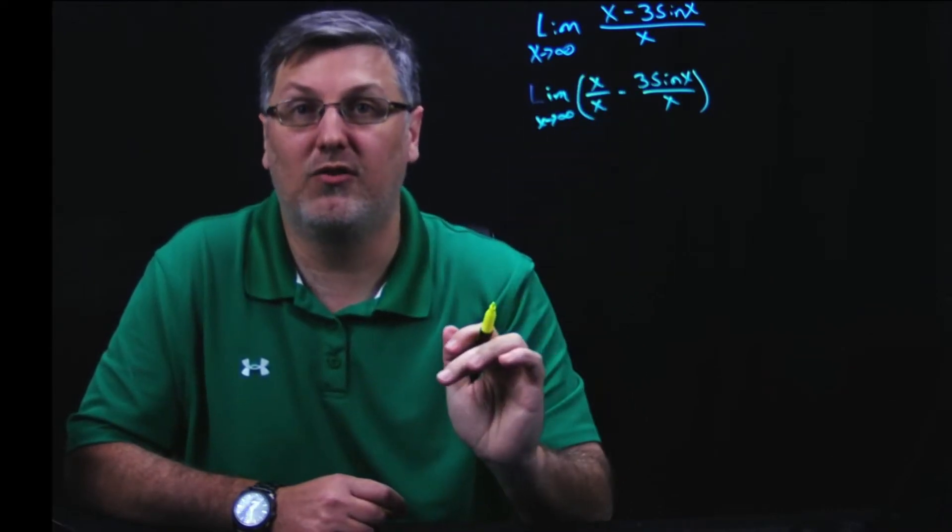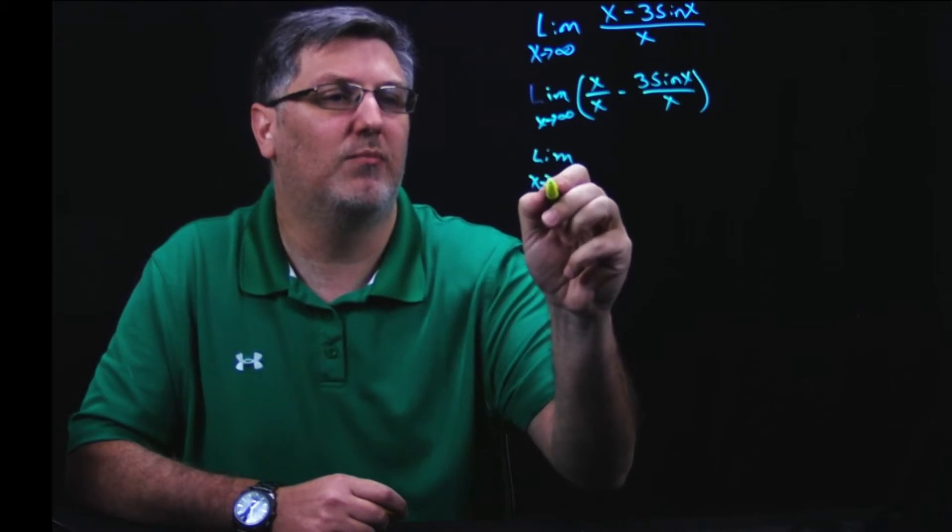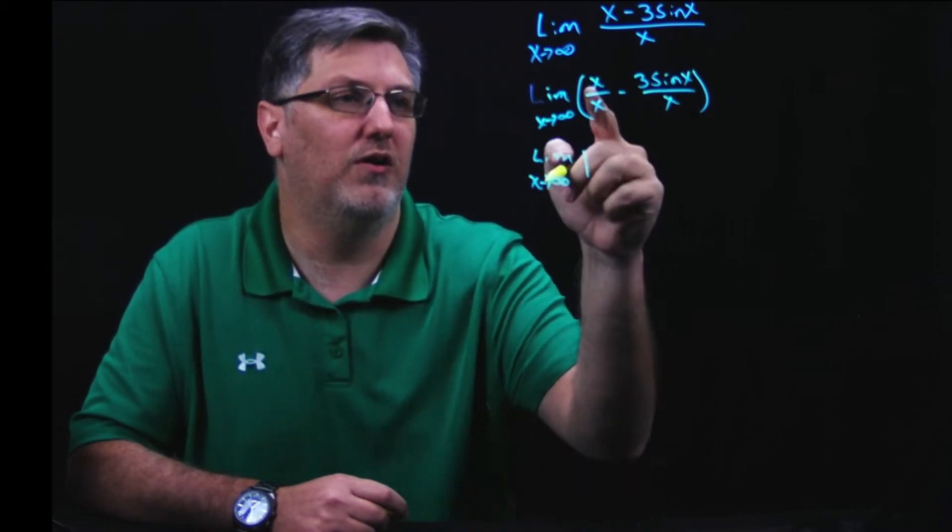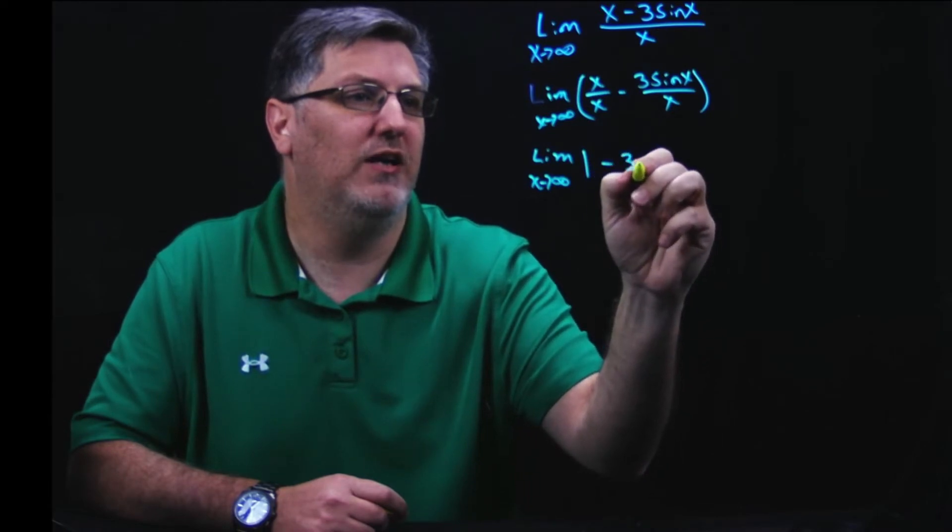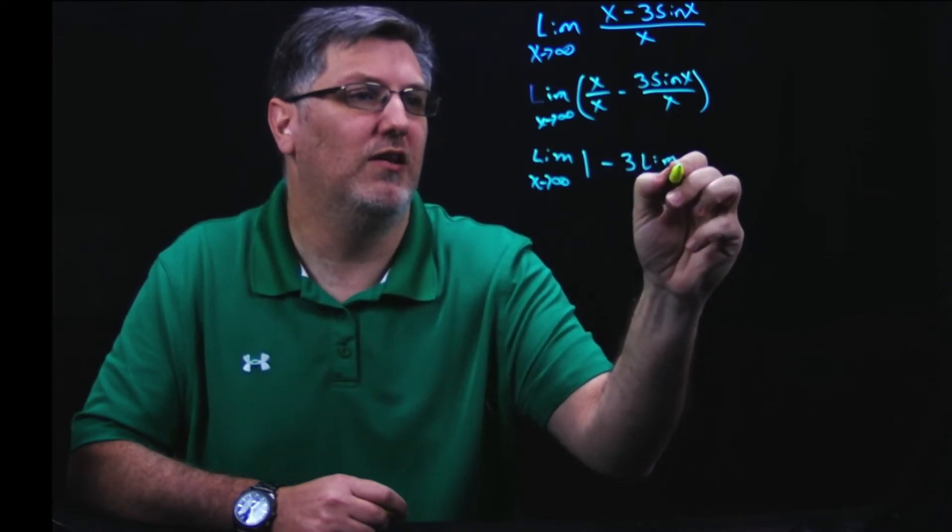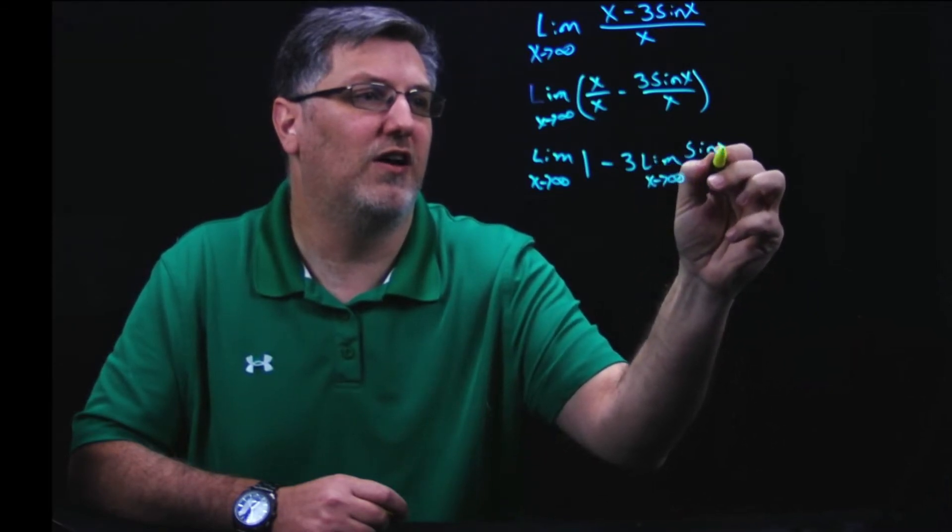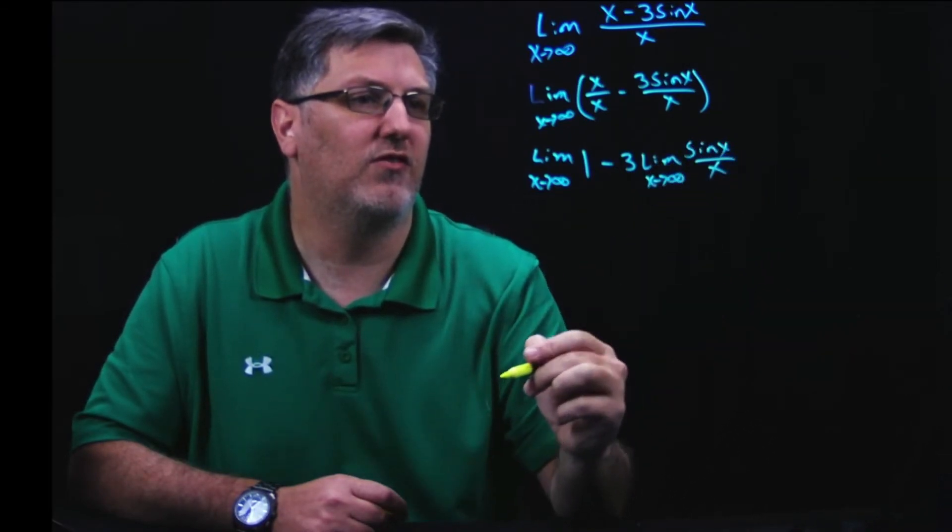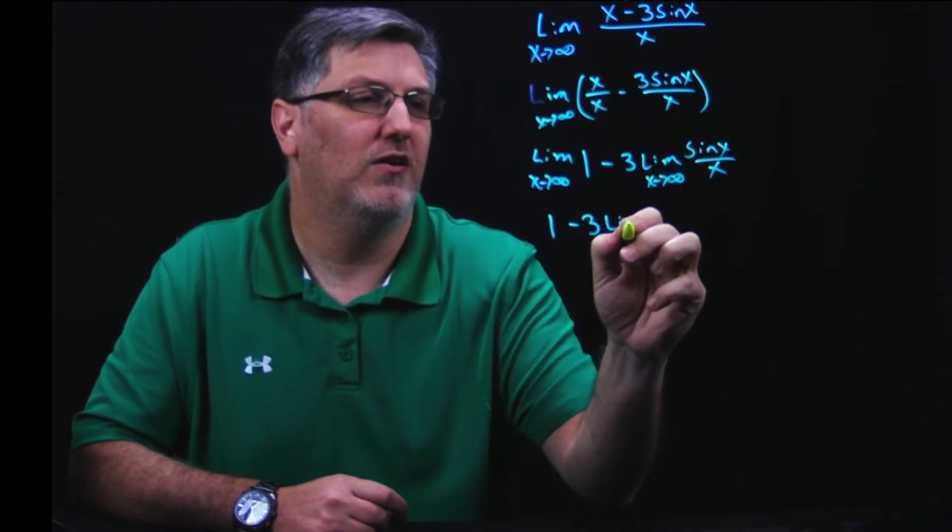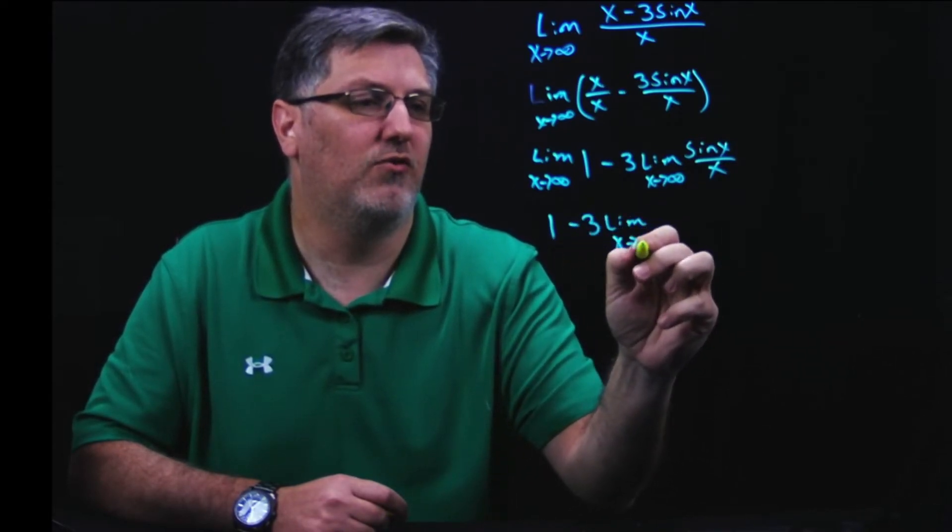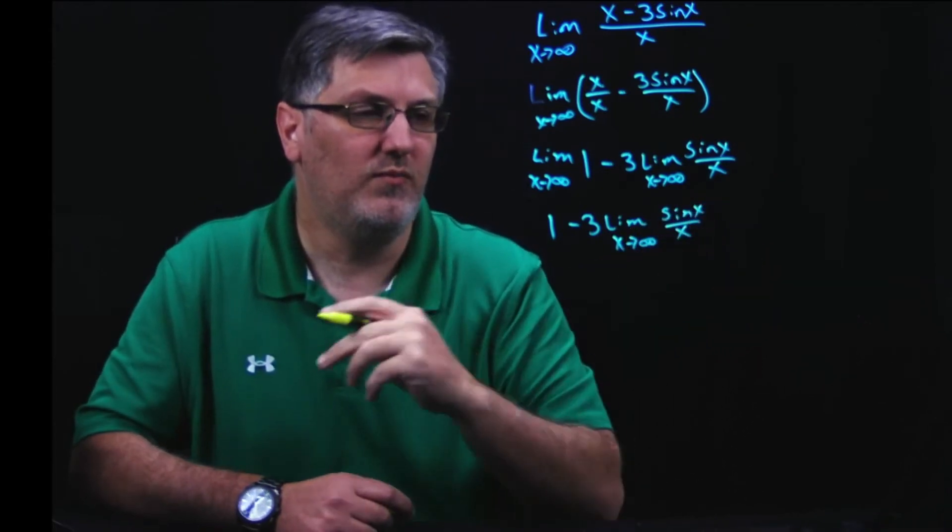And I immediately see x over x is just going to be 1. So I can do the limit as x approaches infinity of 1 minus, I'm going to pull my constant out, 3 times the limit as x approaches infinity of sine x over x. Well, this is just 1 minus 3, the limit as x approaches infinity of sine x over x. And now what?